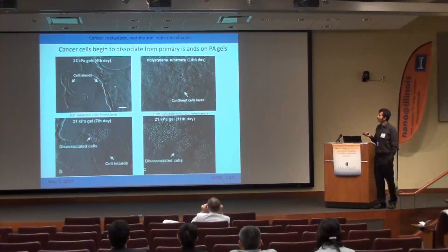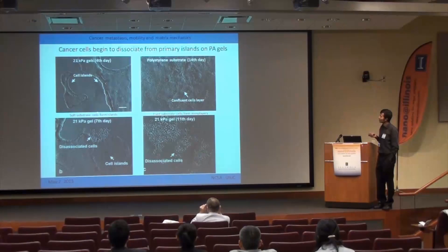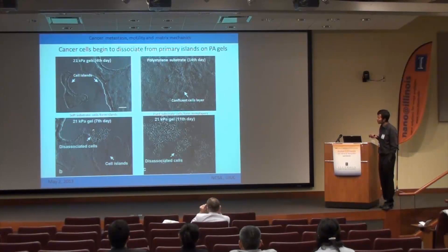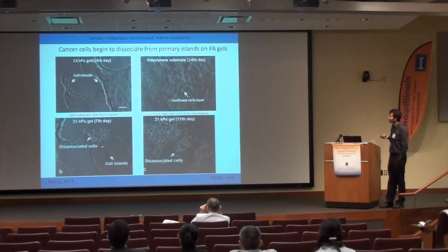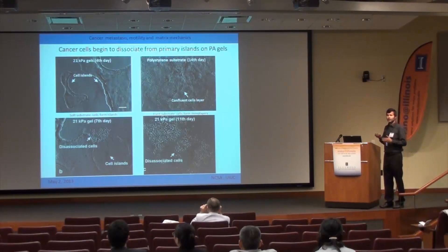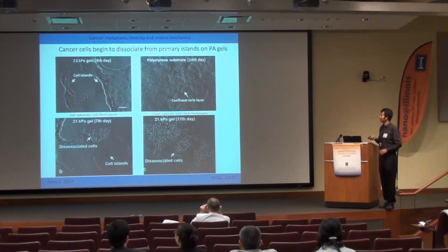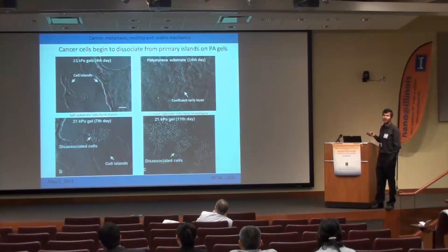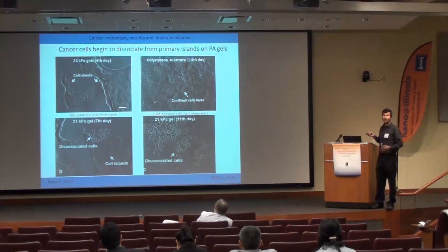After about a week, rounded single cells start to dissociate from the periphery of these cell islands, as seen in phase contrast images. If left longer, some of these islands completely dissociate into numerous single motile live cells — this is like a sort of in vitro metastasis. In contrast, on the hard polystyrene substrate, no dissociative morphological phenotype transition is observed.